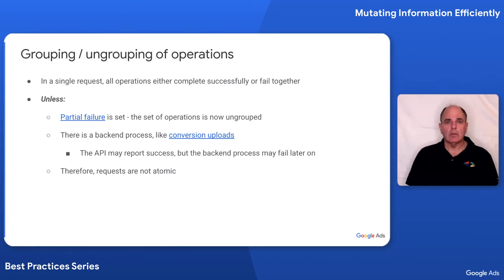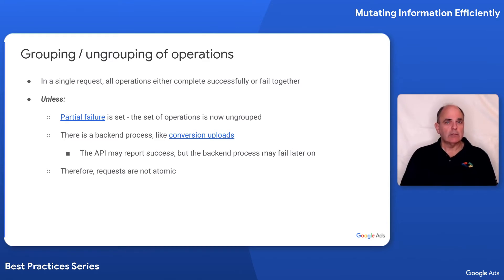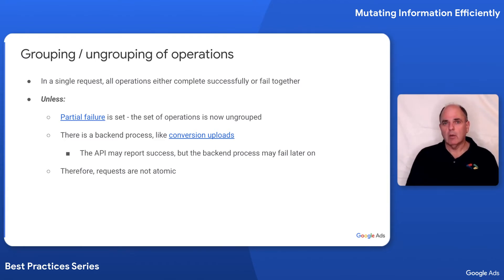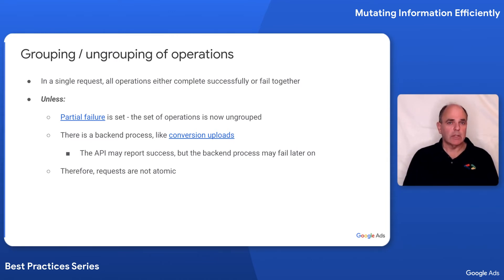There are some exceptions. There's a parameter called partial failure. If partial failure is set, then each of the operations is ungrouped and executed independently — it's as if you made a separate request for each operation. It is still more efficient than making multiple distinct requests, but you don't have the ability to coordinate between different operations. It is also possible to get a success status code, but ultimately the operation may not take effect. A good example of this is conversion uploads, where a batch process behind the scenes performs the upload, which may only occur hours later. We call these operations grouped, but they're not atomic.